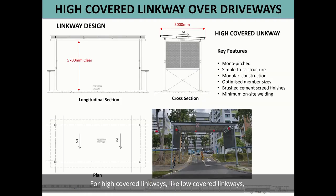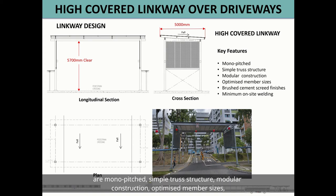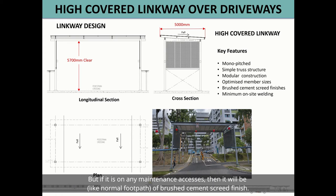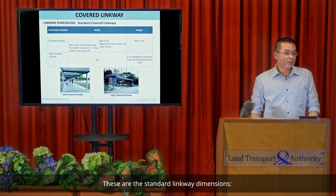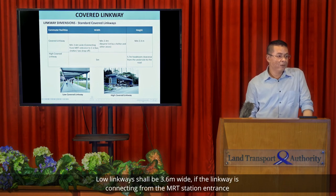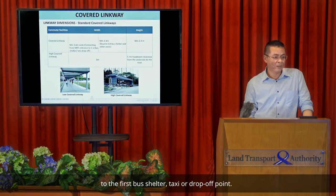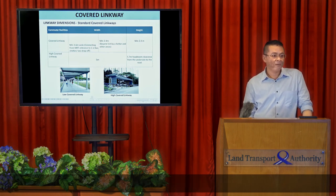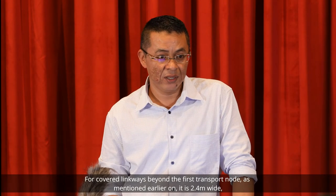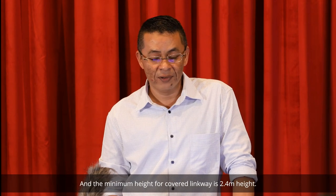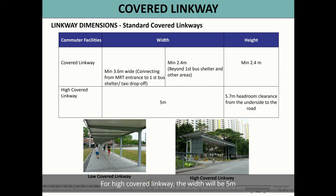For high covered Linkways, like low covered Linkways, adopt the monopitch simple structure, modular construction, and optimum member sizes. When it crosses a road, a tarmac finish is used. For maintenance access areas, a normal footpath brush screed finish applies. The standard Linkway dimensions: for low Linkway, 3.6 metres wide when connecting from MRT station entrance to the first bus shelter or taxi drop-off point; 2.4 metres wide beyond the first transport node. The minimum height for covered Linkway is 2.4 metres. For high covered Linkway, the width is 5 metres and the headroom clearance is 5.7 metres.